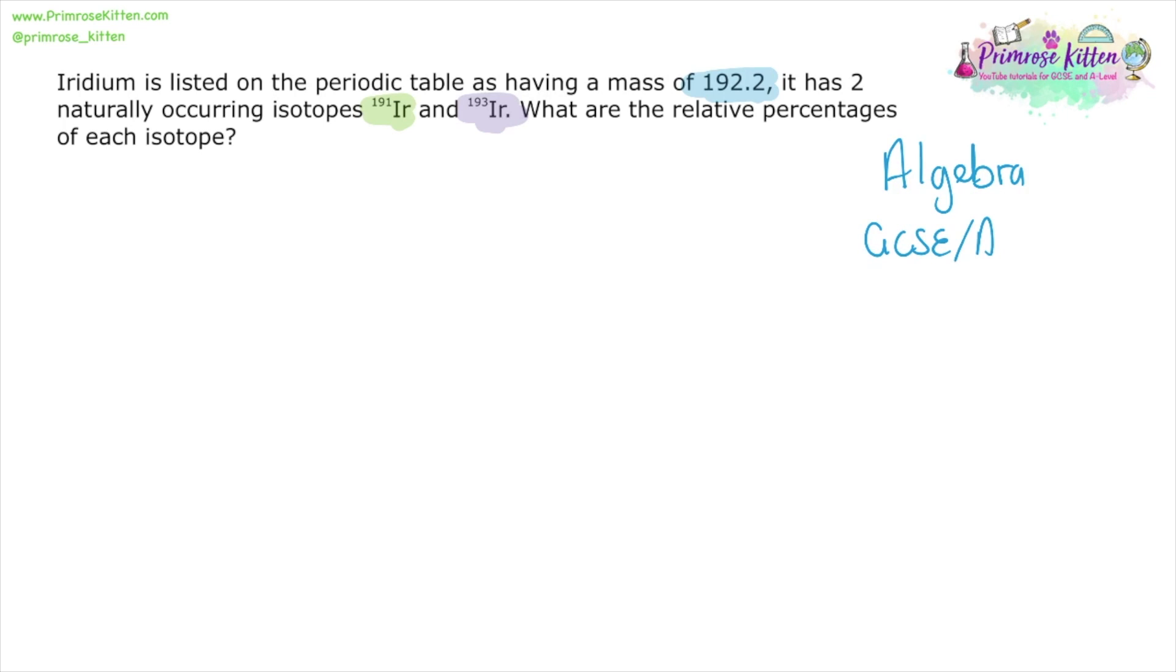And this question is going to be our GCSE A-level crossover. Obviously this is a hard GCSE question but it is a relatively easy A-level question. And we need to be thinking with our maths heads on and do algebra, because this is the working out in reverse. So we can say the percentage of iridium-191 we can call X. Now we know there are two isotopes so iridium-193 must be 100 minus X.